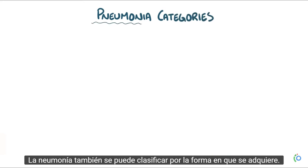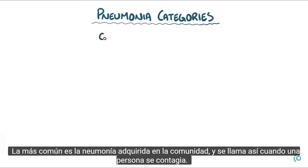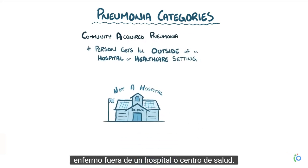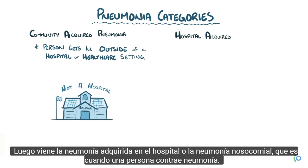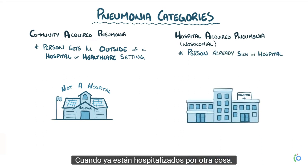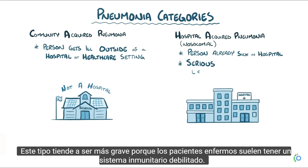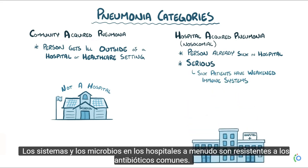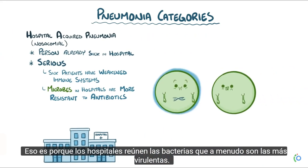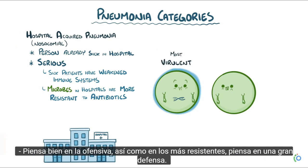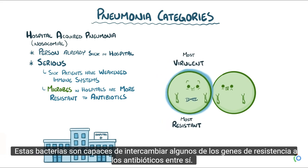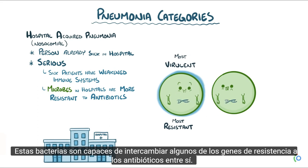Pneumonia can also be categorized by how it's acquired. The most common is community-acquired pneumonia, when a person gets sick outside of a hospital or healthcare setting. Next is hospital-acquired, or nosocomial pneumonia, which is when a person gets pneumonia while already hospitalized for something else. This type tends to be more serious because sick patients often have a weakened immune system and the microbes in hospitals are often resistant to common antibiotics. Hospitals bring together bacteria that are the most virulent and the most resistant, and these bacteria can swap antibiotic resistance genes with each other.